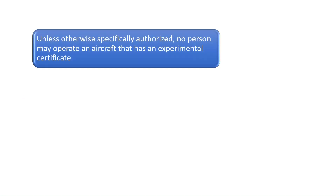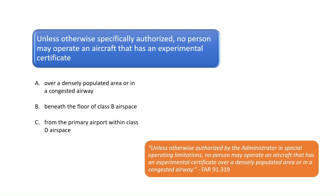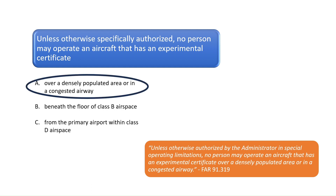Question 5: Unless otherwise specifically authorized, no person may operate an aircraft that has an experimental certificate? According to Section C of FAR Part 91.319, unless otherwise authorized by the administrator in special operating limitations, no person may operate an aircraft that has an experimental certificate over a densely populated area or in a congested airway. The correct answer is A.